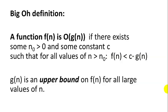So now hopefully you have some idea of what big O is. Here's a formal definition of big O. The function f of n is big O of g of n if there exists some n naught greater than zero and some constant c such that for all values of n greater than n naught, f of n is less than this constant times g of n.